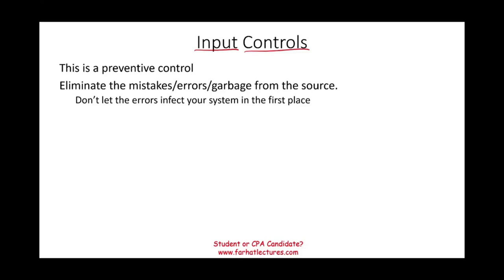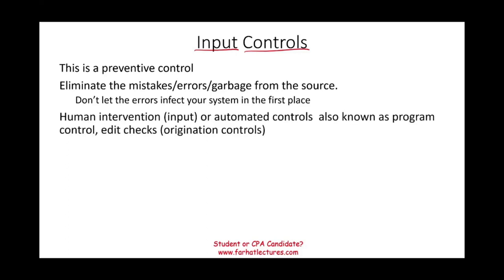You can use people to prevent errors, or you can automate the system. Every time you can automate the system, especially for routine transactions, it should be done. We call it input control because if a human is inputting the information into the system — think about the old days when they typed everything — input control means making sure the human does not make mistakes.